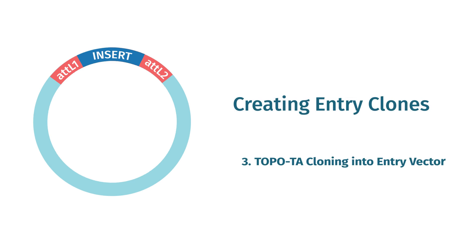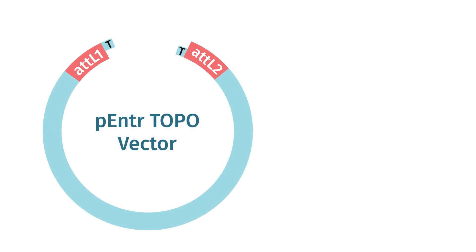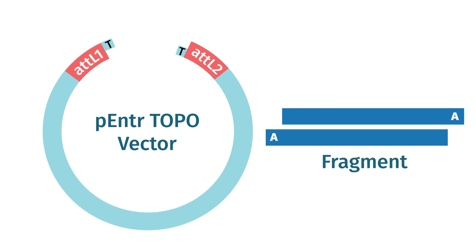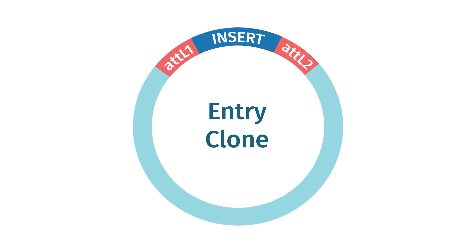The third option uses TOPO TA cloning to create your entry clone. Several vectors allow directional insertion of a PCR product by TOPO cloning, introducing your fragment of interest between AT-L1 and AT-L2. Sequencing is always the last step in verifying the completed entry clone.